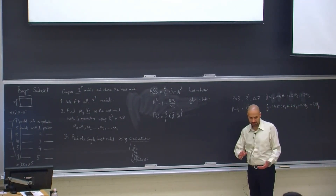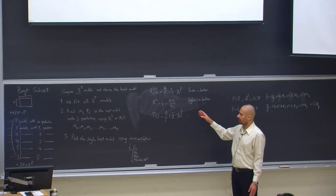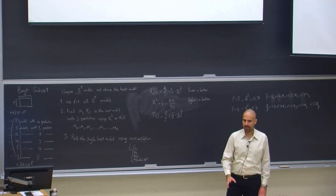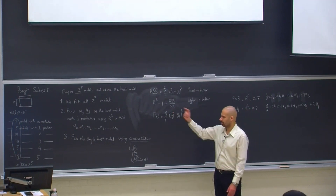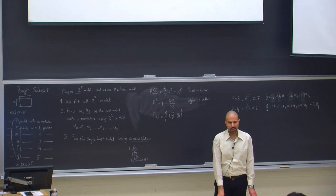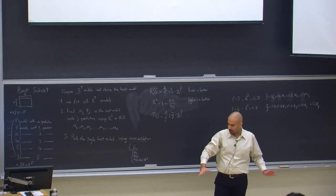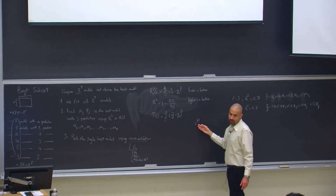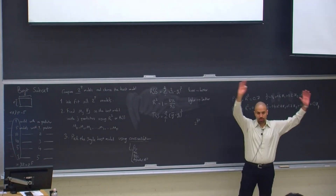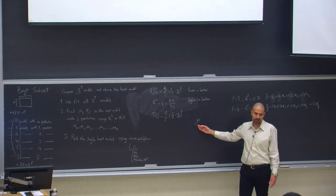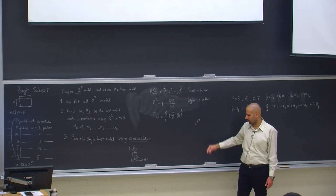Best subset selection is theoretically simple since we compare all possible models systematically, but it only works when the number of predictors is small — say, less than 20, where 2^20 is still manageable. Beyond that, we wouldn't use best subset selection due to computational cost and also overfitting: exploring such a large space of possible models and picking the best will produce something that looks perfect on training data but performs poorly on test data.